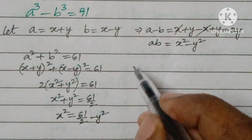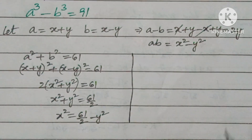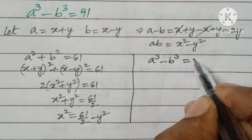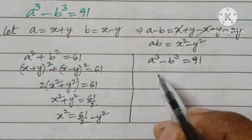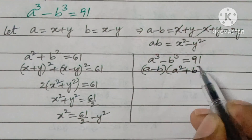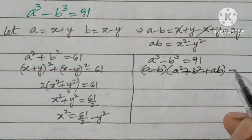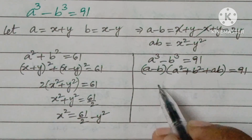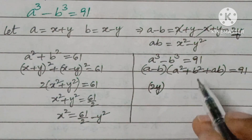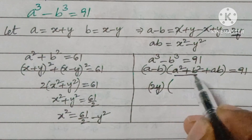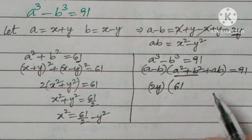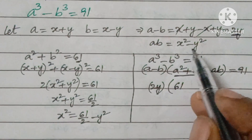Now going to the second equation: a³ - b³ = 91. Using the factored formula, this equals (a - b)(a² + b² + ab) = 91. We substitute a - b = 2y, a² + b² = 61, and ab = x² - y².